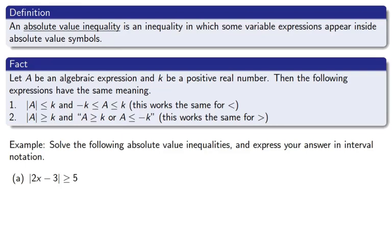Next we work on absolute value inequalities, keeping it linear with one variable. An absolute value inequality has a variable expression inside the absolute value. There are two rules. For a less than or less than or equal to: rewrite as a compound inequality where negative k is less than or equal to the inside expression, which is less than or equal to k. For a greater than or equal to: create two separate expressions — one just drops the absolute value, and the other says the inside must be less than negative k.